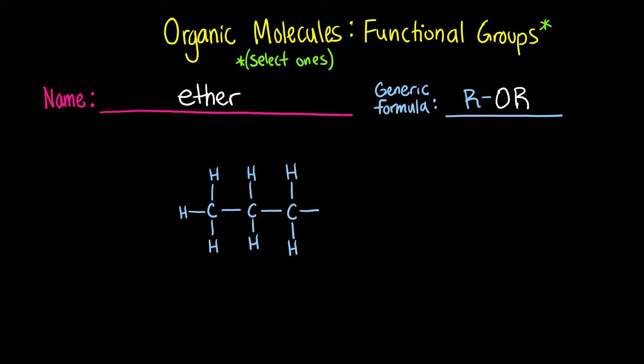An ether is an oxygen that is bonded to one carbon on either side. In this example, the ether has three carbons on one side and one carbon on the other side. In college, I remembered ether as either or. Either this side or that side.